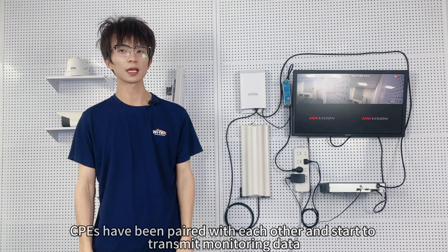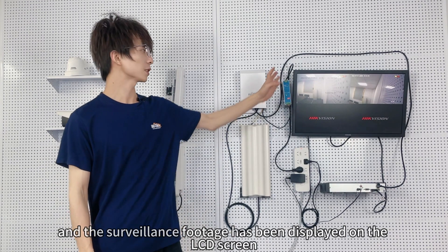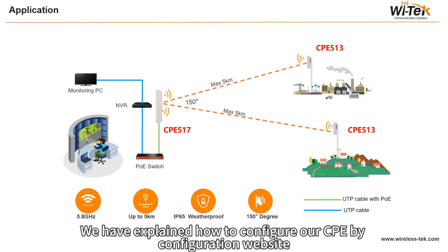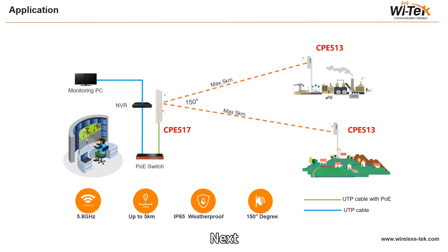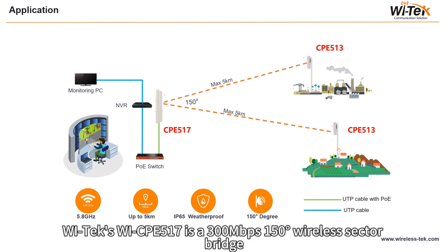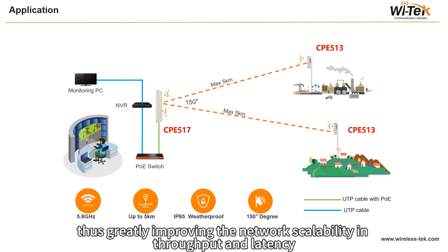The CPEs have been paired with each other and start to transmit monitoring data, and the surveillance footage has been displayed on the LCD screen. We have explained how to configure our CPE by the configuration website. Next, I am going to share a typical point-to-multipoint scenario of CPE517. Vitek's WI-CPE517 is a 300 Mbps, 150-degree wireless sector bridge. It is fully compatible with Vitek base station and CPE, thus greatly improving the network scalability in throughput and latency.